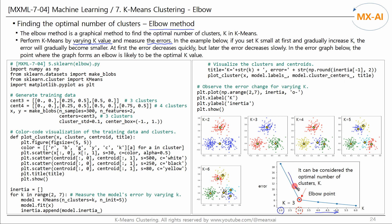At first, the error decreases quickly, but later the error decreases slowly. In the error graph, the point where the graph forms an elbow is likely to be the optimal k value.